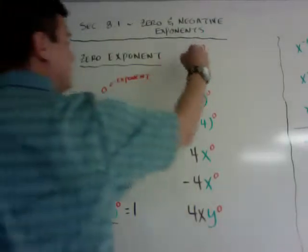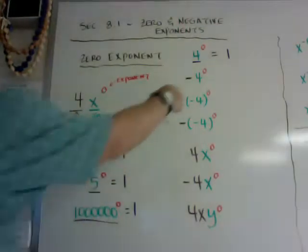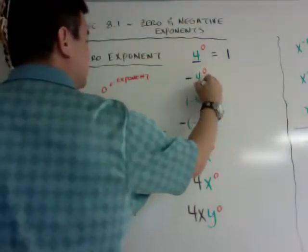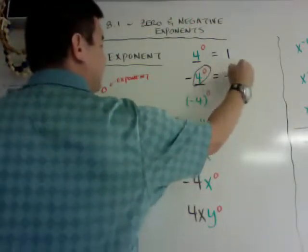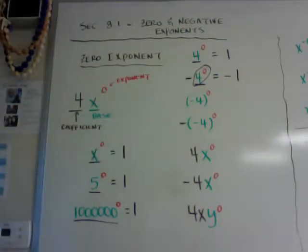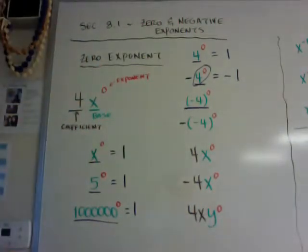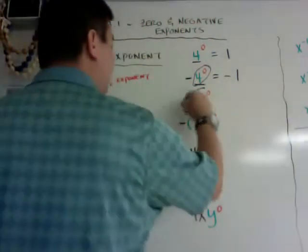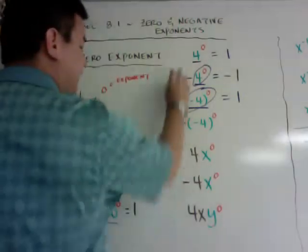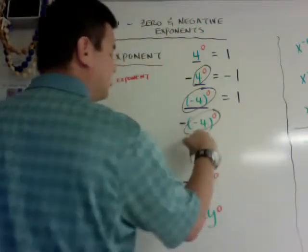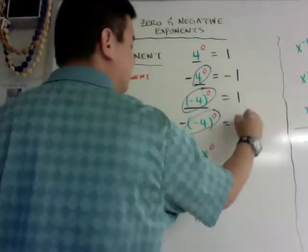Here are some more examples. 4 to the zero — this is my base — so that equals 1. In this case, 4 is my base and goes to the zero, and I'm left with this negative 1, so this becomes 1 and the answer is negative 1. When I have parentheses, the whole negative 4 in parentheses is my base, so that all goes to the zero power and equals 1. With the outside negative, the answer is negative 1.